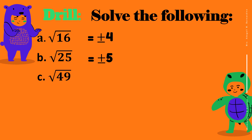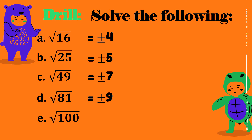For letter C, we have the square root of 49. The answer is positive or negative 7. For letter D, we have the square root of 81. The answer is positive or negative 9. For letter E, we have the square root of 100. The answer is positive or negative 10.